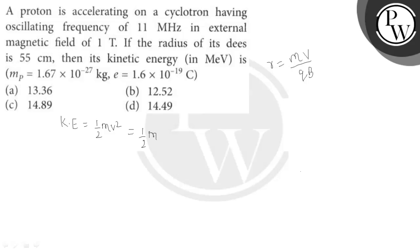We know that v equals Q B R by m. Substituting this, we get KE equals half m times Q B R by m whole squared, which gives Q squared B squared R squared upon 2m. So the kinetic energy formula is Q²B²R²/2m. Now we'll substitute the values.